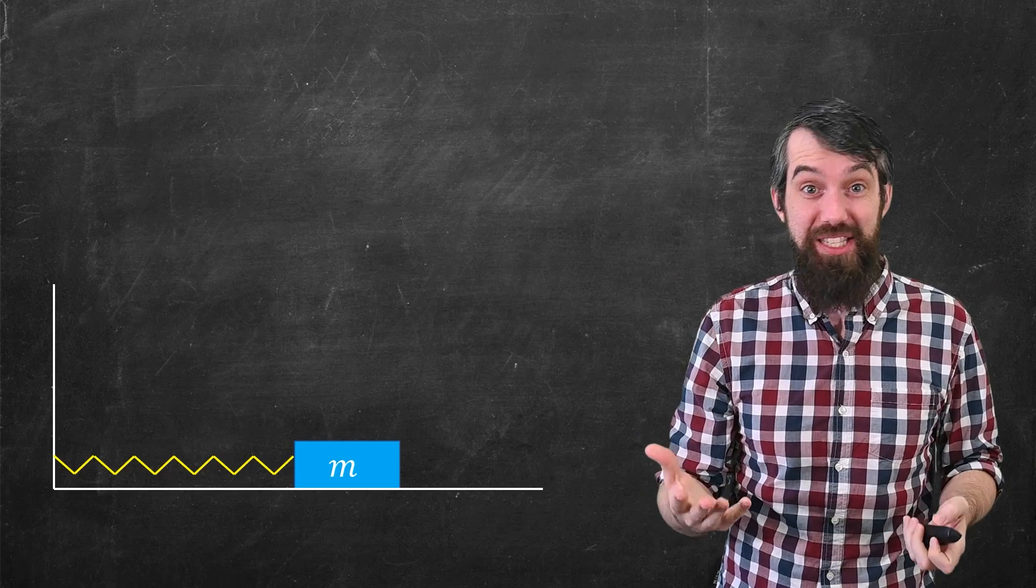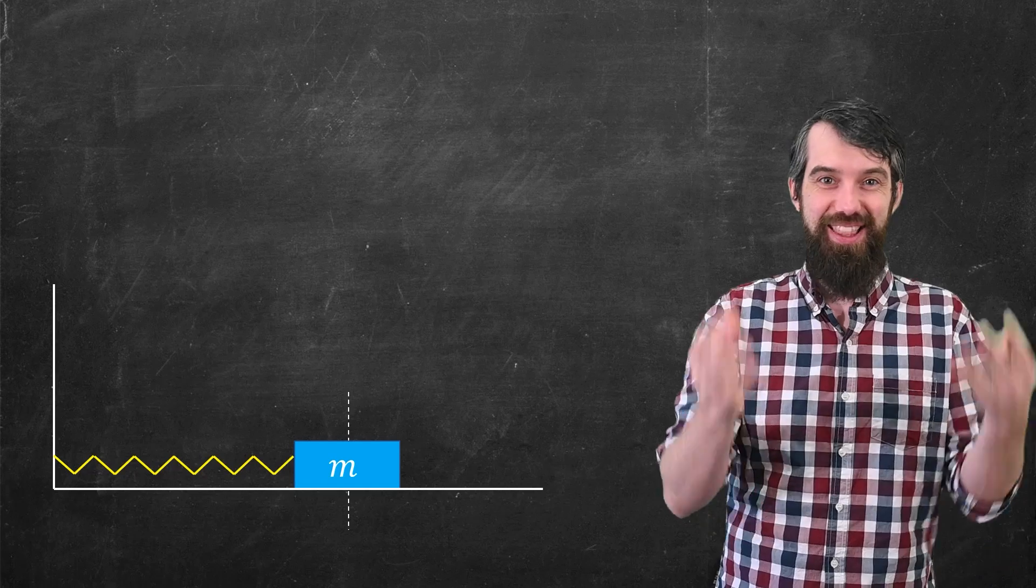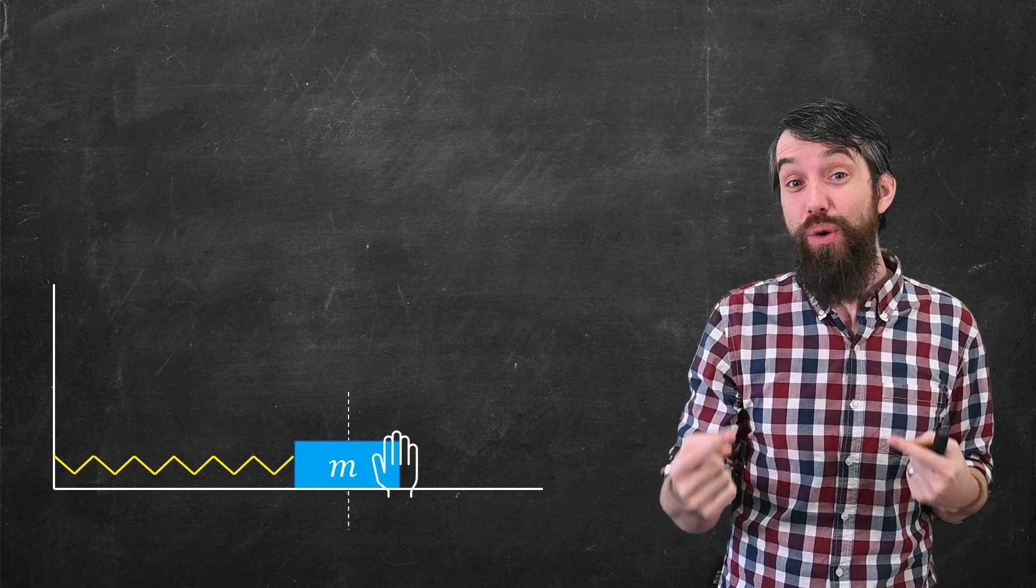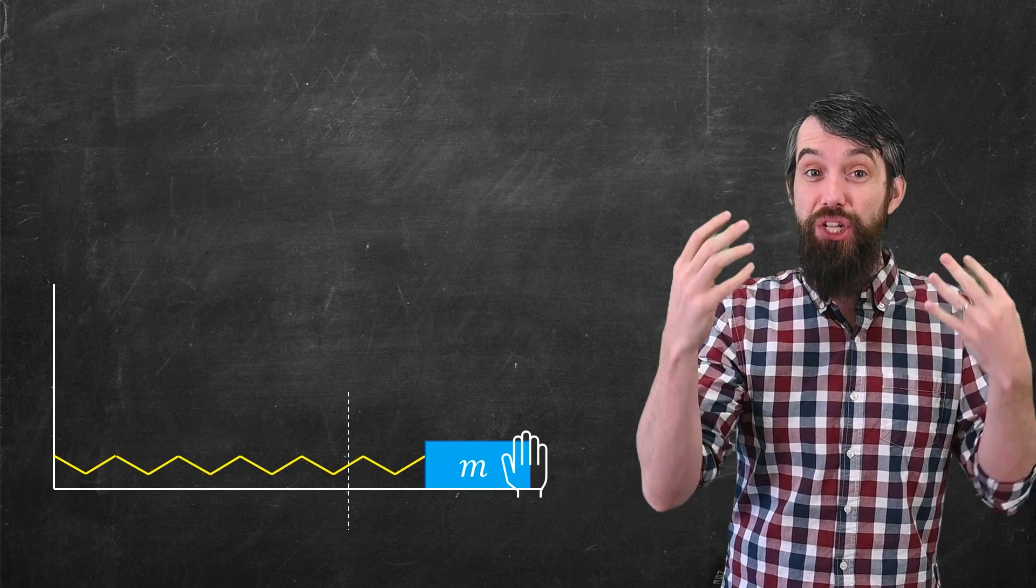So if at the beginning this is at rest, for example I'll put an equilibrium position to say if I don't touch anything that would just rest right here, but if I grab it I could move it away from that equilibrium spot. And then the question is, well what happens if I let go?